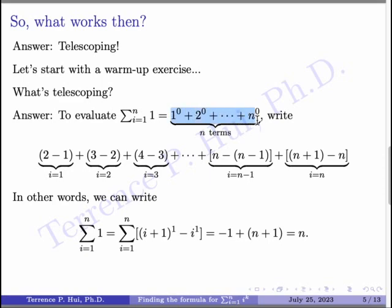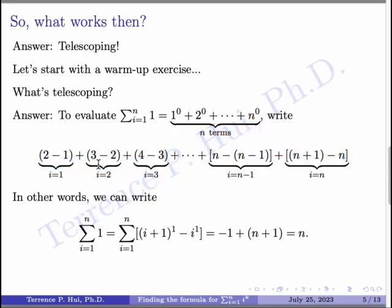Now, let's look at the first term. I'm going to write 1 as 2 minus 1. The second one, I'll write as 3 minus 2, and so on. The second-to-last term is n minus (n minus 1). The last term is (n plus 1) minus n. You notice every single group here is 1. And if you give it some thought, you realize: this is just (i plus 1) to the first power minus i to the first power — that's telescoping. You go forward and subtract the current. Then you go forward again and subtract the current. Look at this minus 1: it has no one to cancel with, so it stays. However, this positive 2 cancels with this negative 2. This positive 3 cancels with this negative 3, and so on.